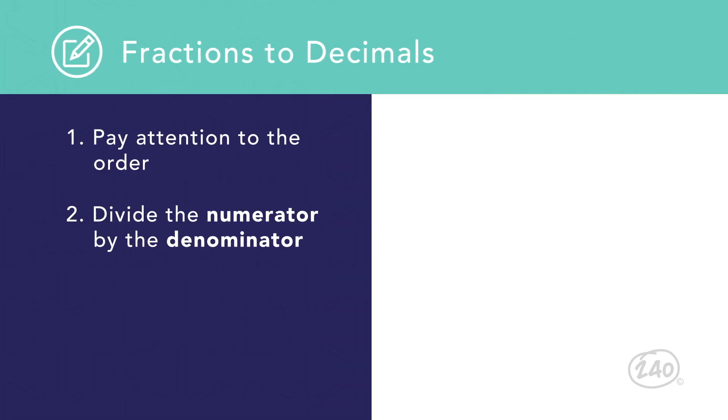When turning a fraction into a decimal, pay attention to the order. You'll divide the numerator by the denominator. For example, two thirds becomes two divided by three, which equals the repeating decimal zero point six six. If we accidentally did this in reverse order, a calculator would give us the terminating decimal one point five.